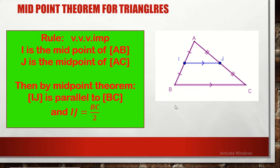We use the midpoint theorem to prove that IJ is parallel to BC when we need to prove them parallel. We can also use it to find the length of IJ if the length of BC is given, or the contrary. For example, if BC equals 10 cm, then IJ by midpoint theorem will be half BC, so its length will be 5. If IJ equals 3 cm, then BC will be double IJ, so it will be 6 cm. We can apply midpoint theorem to prove the midsegment is parallel to the base, or to find the length of the midsegment or the base.